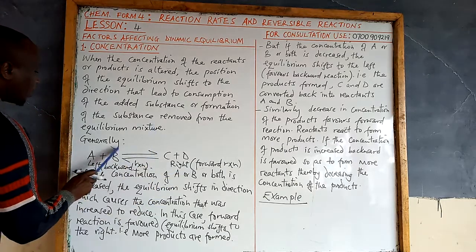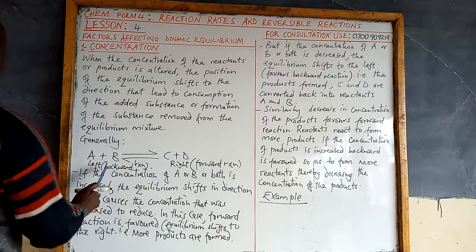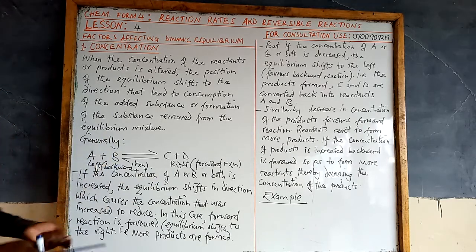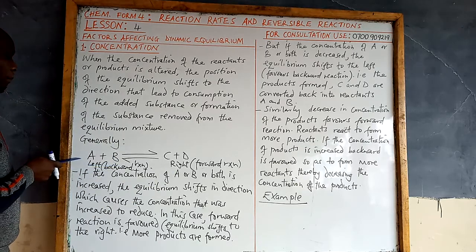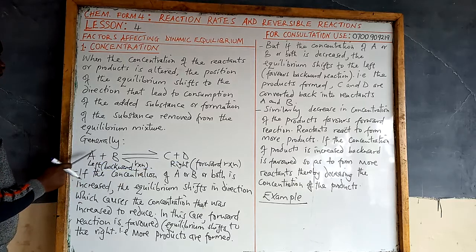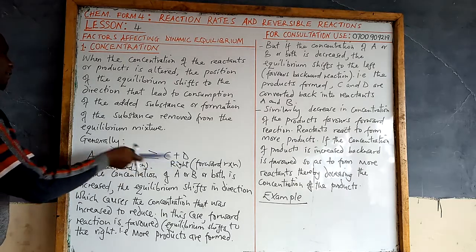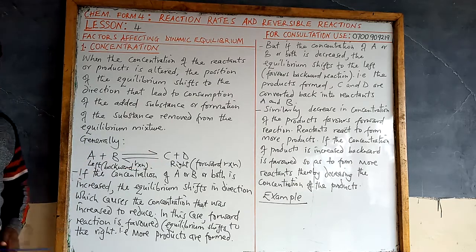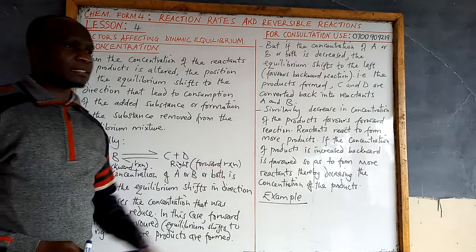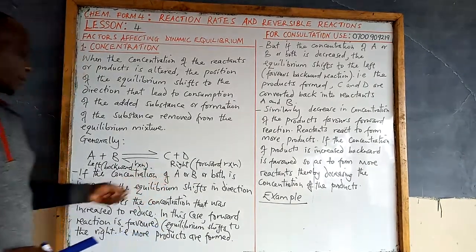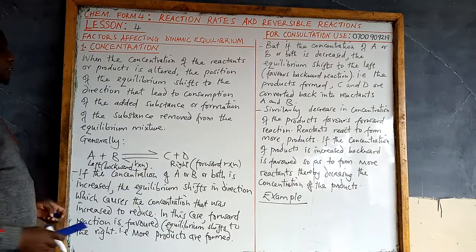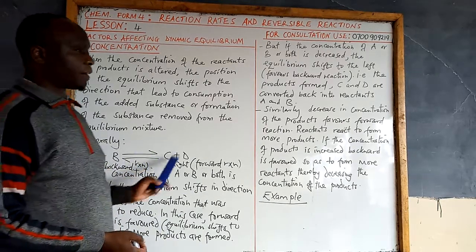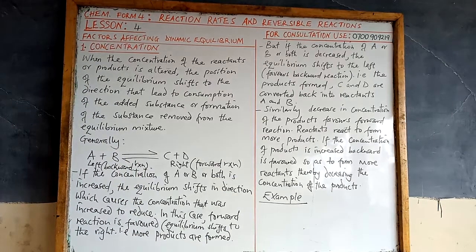To summarize: a decrease in product concentration favors backward reaction, and an increase in product concentration also favors backward reaction. Now we are going to look at some specific examples illustrating the change in concentration and its effect on equilibrium.